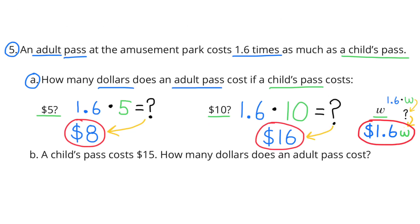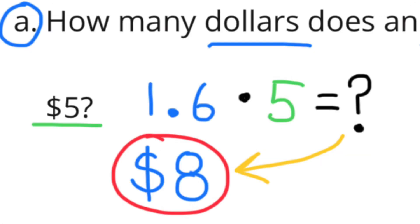Number 5: An adult pass at the amusement park costs 1 and 6 tenths times as much as a child's pass. Part a: How many dollars does an adult pass cost if the child's pass costs $5? 1.6 times 5 equals 8. When the child's pass costs $5, the adult's pass would cost $8.